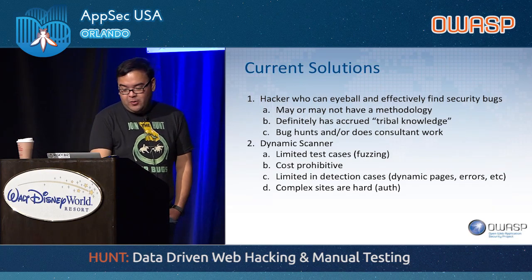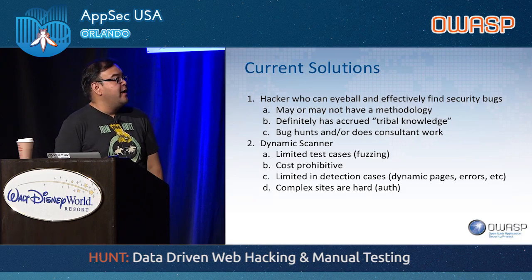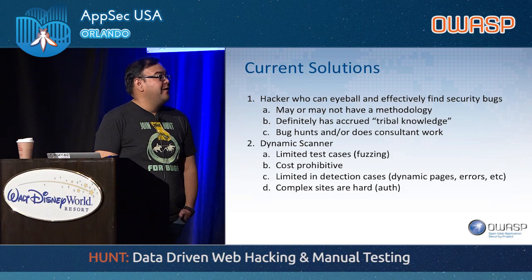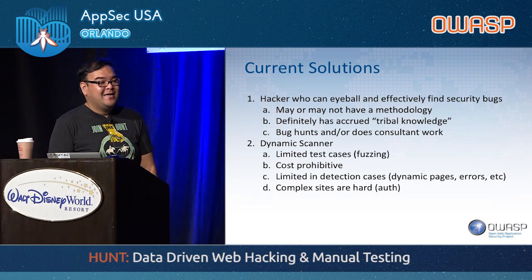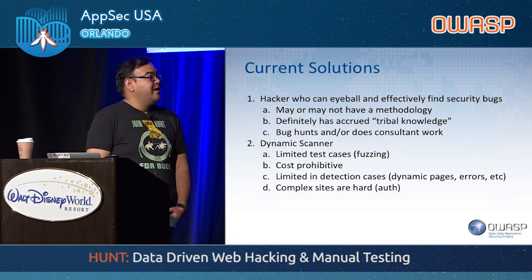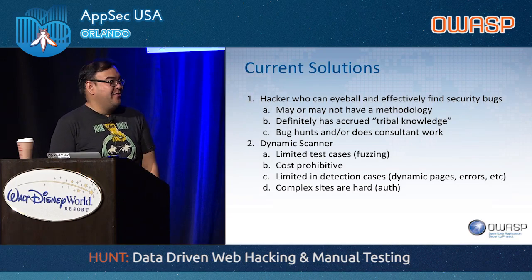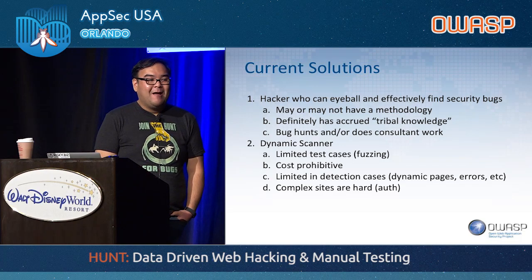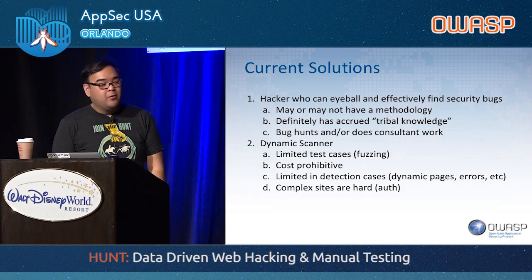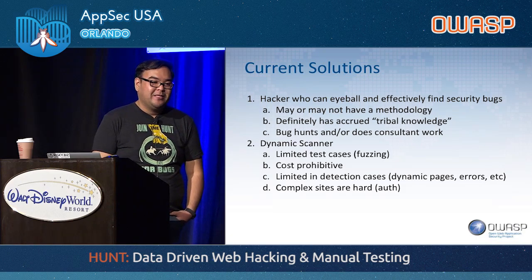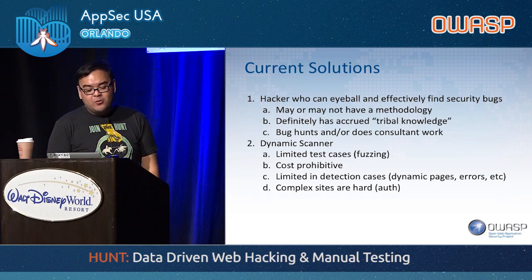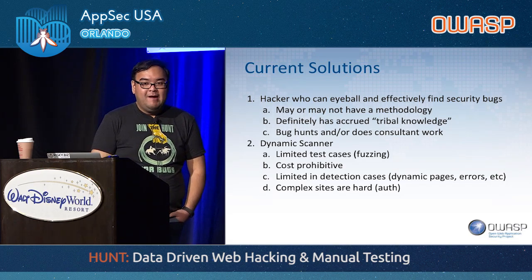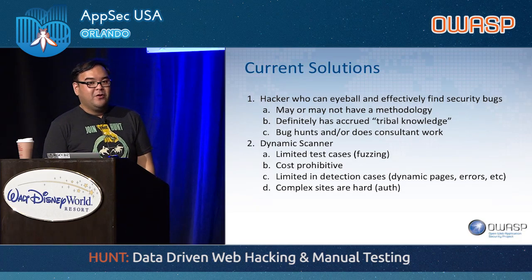What are the current solutions for those problems? Number one: hackers who can eyeball and effectively find security bugs. There's a severe shortage in finding a good pen tester. Really, they may or may not have a methodology — it could be some kind of 'yolo swag' approach where you just go at an application and find vulnerabilities without a methodology. But it's important to use a methodology when you're doing your testing. Definitely the experienced tester has accrued tribal knowledge, which puts new pen testers at a disadvantage because they just don't have that experience.